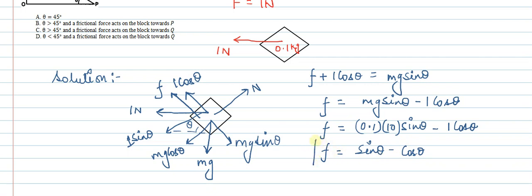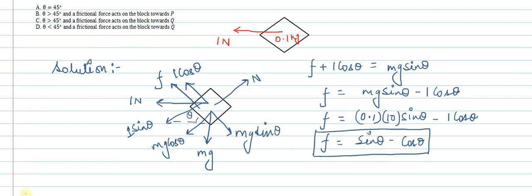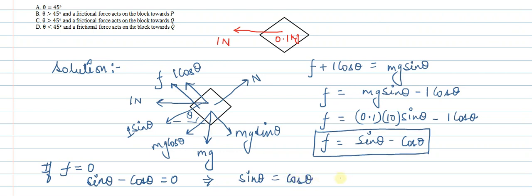This simplifies to f equal to sin theta minus cos theta. This is our basic equation which we will use to work on the options. For option A where theta equals 45 degrees: if friction f equals 0, then sin theta minus cos theta equals 0, which gives sin theta equal to cos theta. This happens only when theta is 45 degrees, confirming option A.